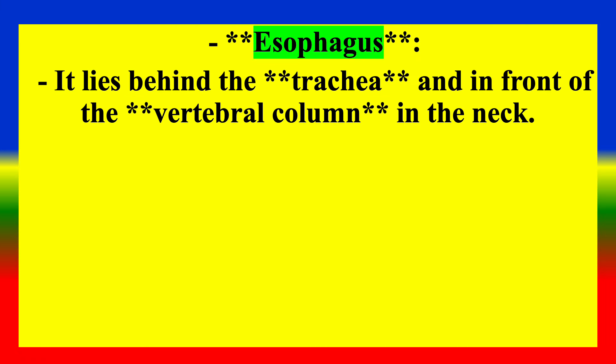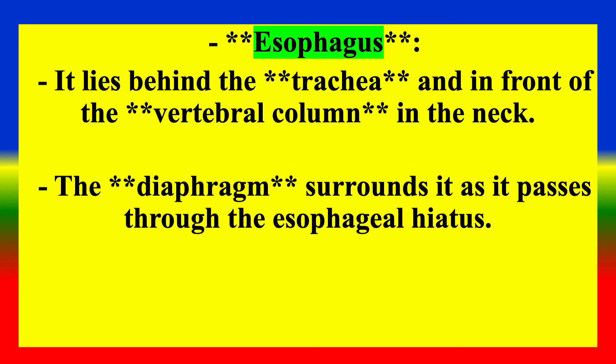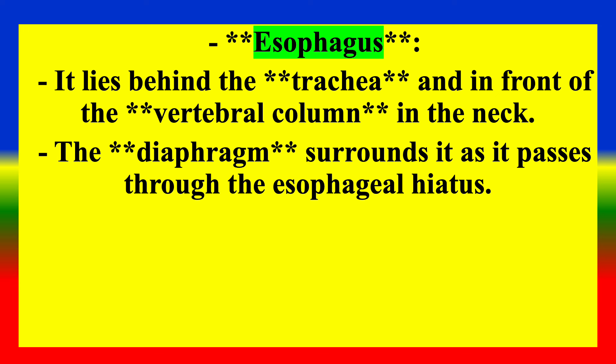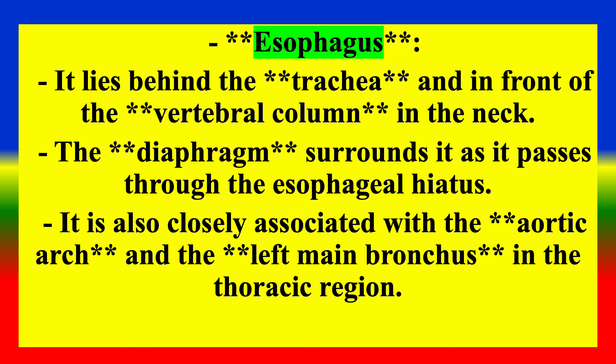Associated Structures — Esophagus: It lies behind the trachea and in front of the vertebral column in the neck. The diaphragm surrounds it as it passes through the esophageal hiatus. It is also closely associated with the aortic arch and the left main bronchus in the thoracic region.